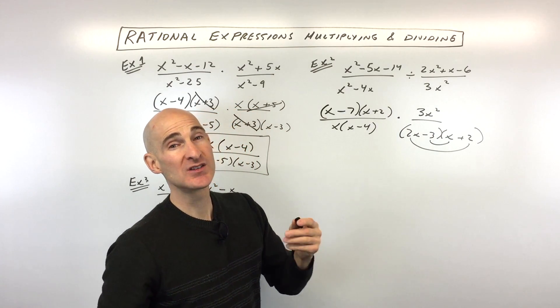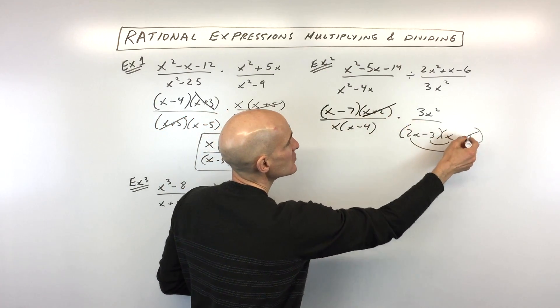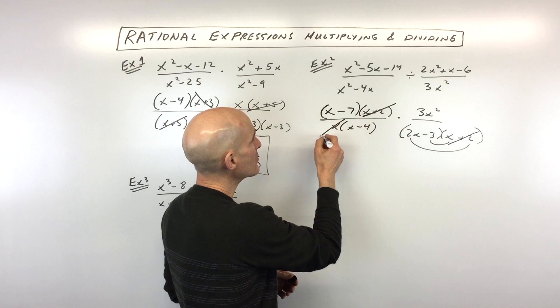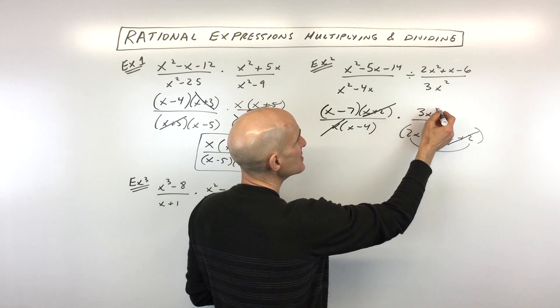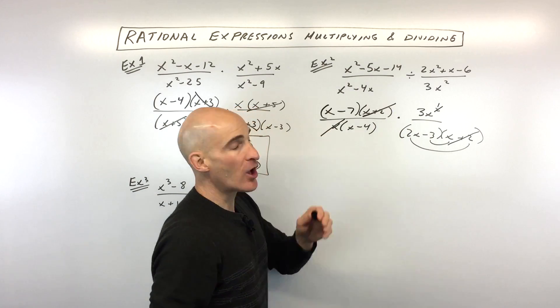So now all we have to do is reduce. So we can see that we've got x plus 2 in the numerator cancels with x plus 2 in the denominator. This x here cancels with one of these x's here. So I'm just going to change this to a 1, 3x to the first. And that's really all we can do.